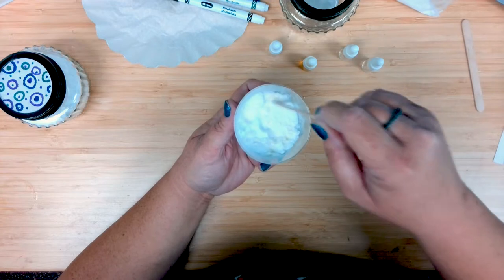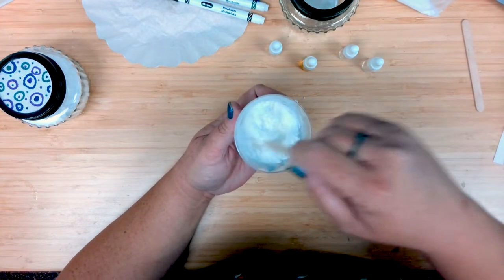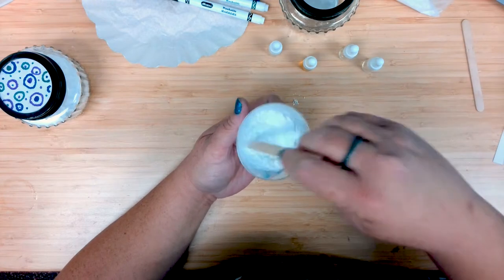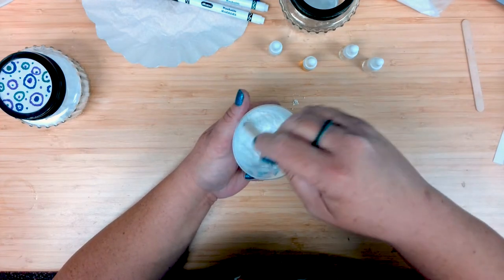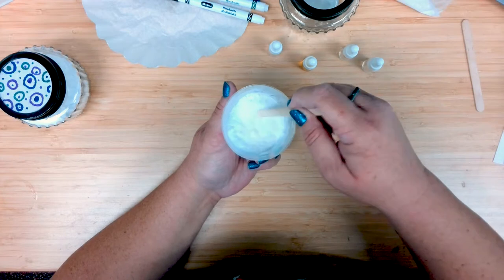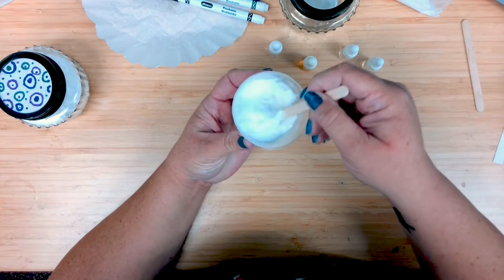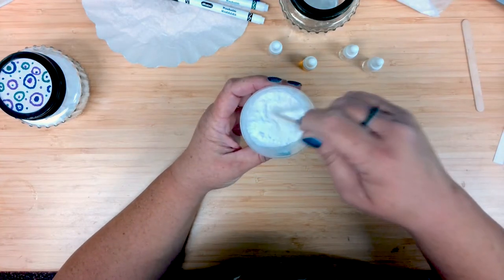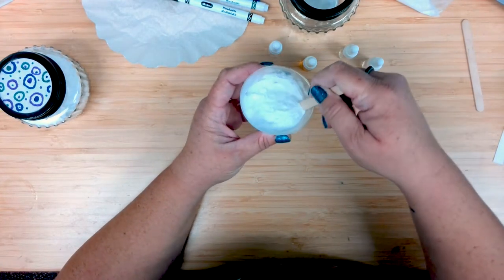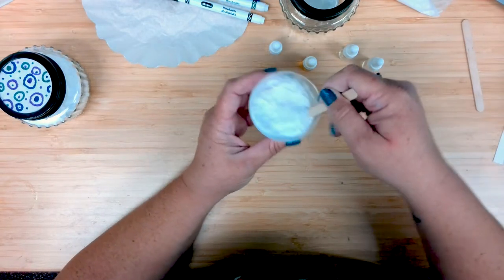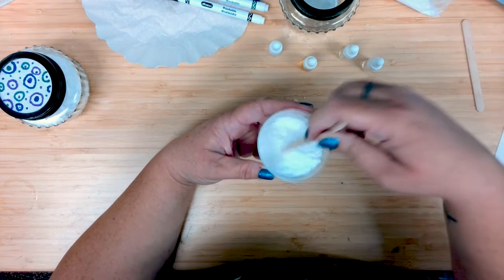The Arm & Hammer website actually recommends that you can take about a tablespoon of the baking soda and five or six drops of essential oils in a spray bottle and use it as a spray room freshener. So that's an option if you've got an extra spray bottle or grab one from the Dollar Tree and use that.